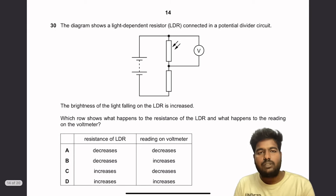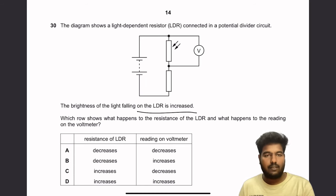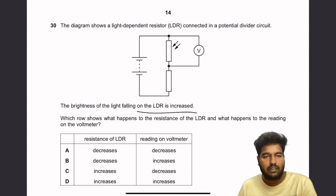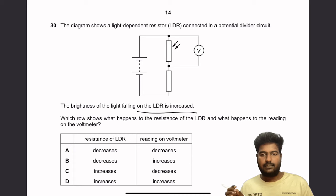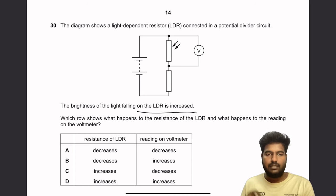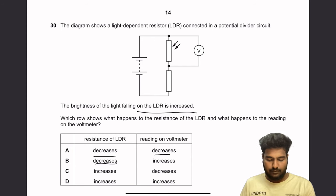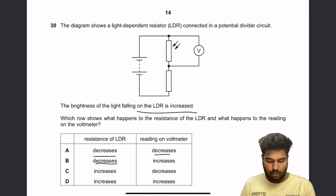Question 30: A light-dependent resistor (LDR) is connected to a potential divider circuit. When the brightness of light on the LDR increases, more free electrons are available, so resistance of the LDR decreases. Since V = IR, and resistance decreases, the voltmeter reading also decreases. Resistance and voltage are directly proportional here. So A is the right answer.